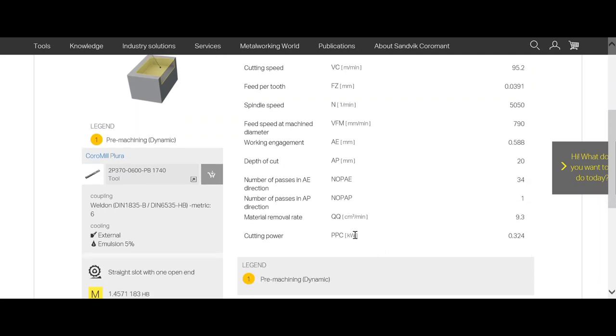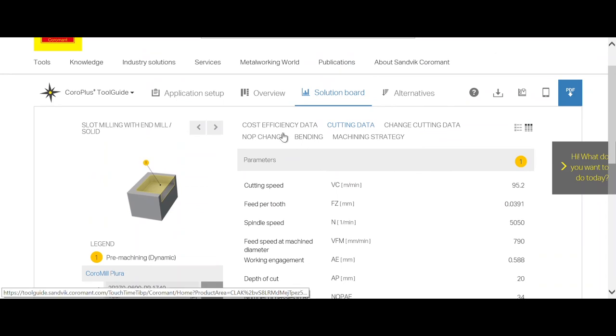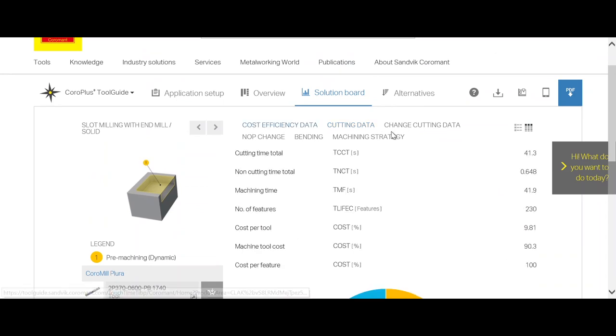We also see the cutting power. So we have very low cutting power. This will also be easy on small machines as well. And we can also take a look at the cost efficiency data.